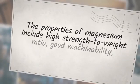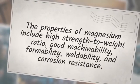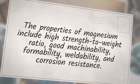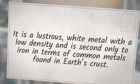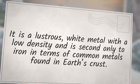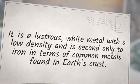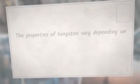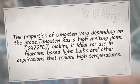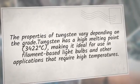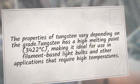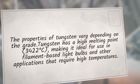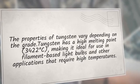The properties of magnesium include a high strength-to-weight ratio, good machinability, formability, weldability, and corrosion resistance. It is a lustrous white metal with a low density and is second only to iron in terms of common metals found in Earth's crust. Tungsten has a high melting point of 3,422 degrees Celsius, making it ideal for use in filament-based light bulbs and other applications that require high temperatures.